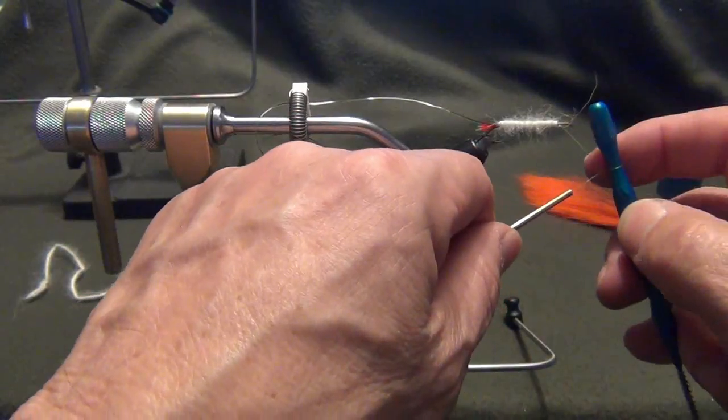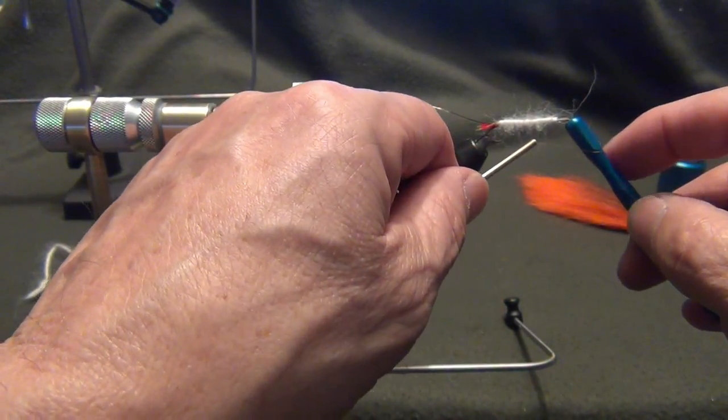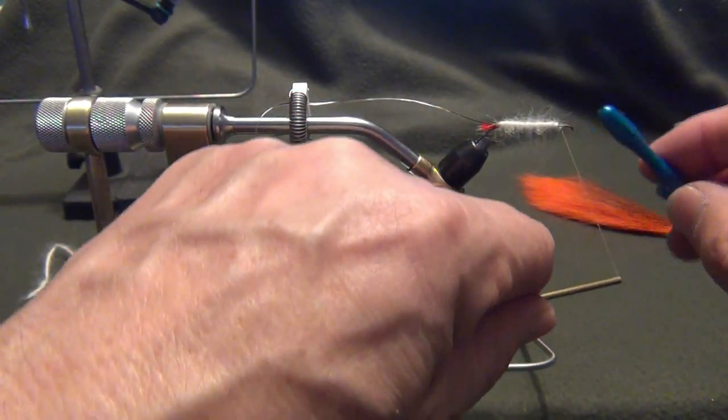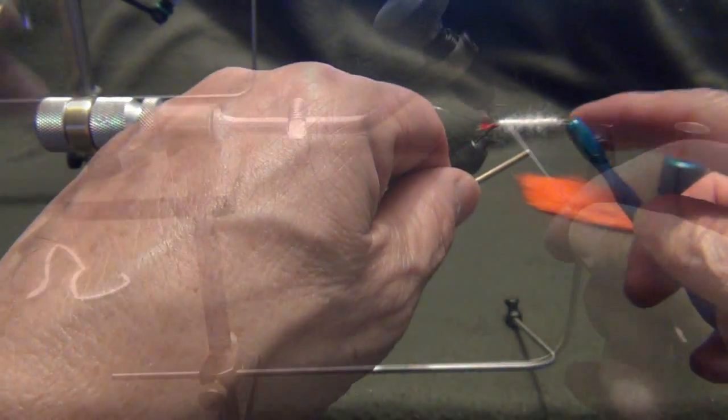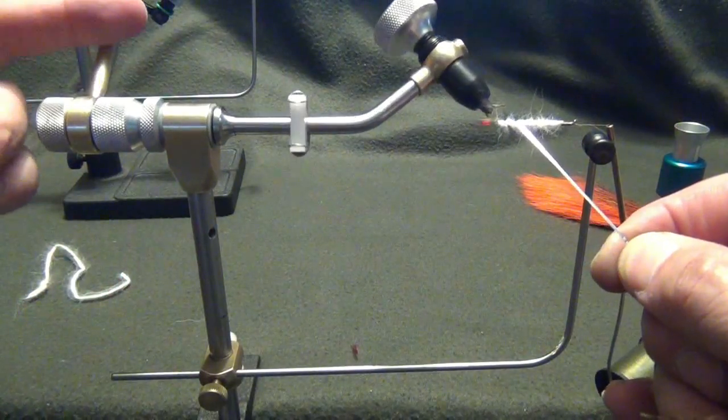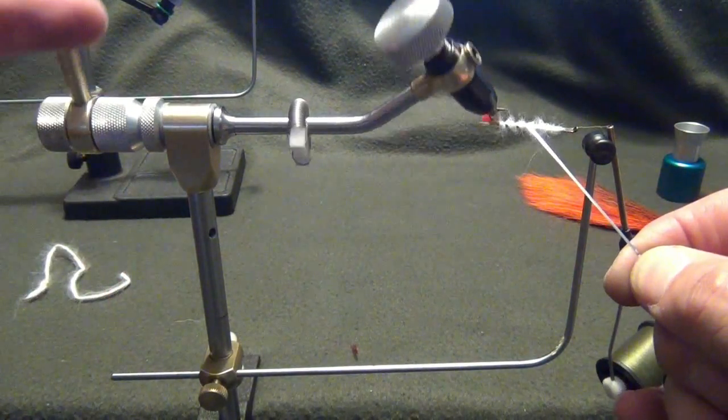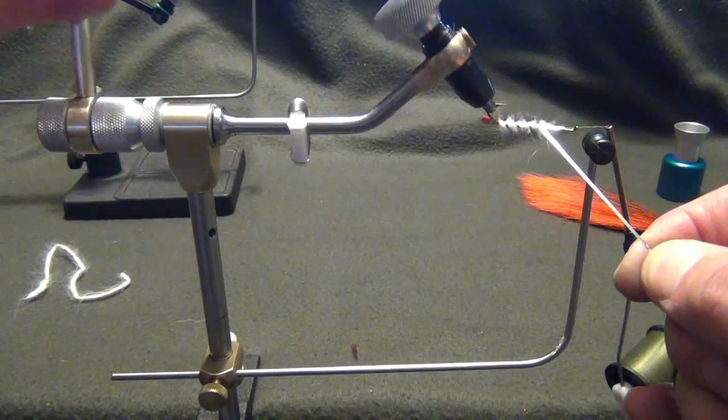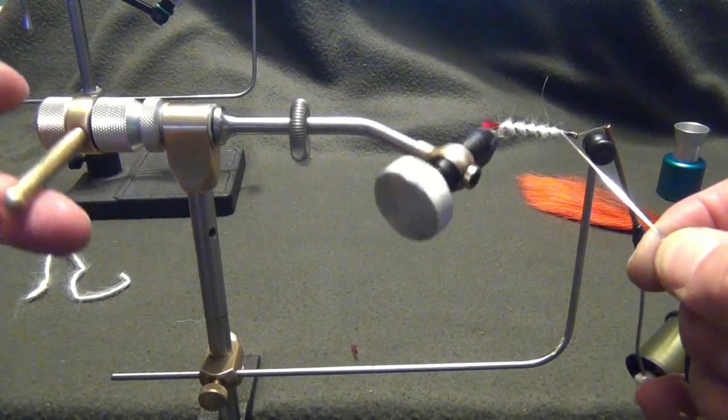The only problem then is sometimes the thread seems to chase the bobbin and unwrap. This is solved with a half hitch or a one or two wrap whip finish knot. That's it. From then on, it's wrap and unwrap as you please, and you won't be bothered with thread bumps building up or thread unwrapping.